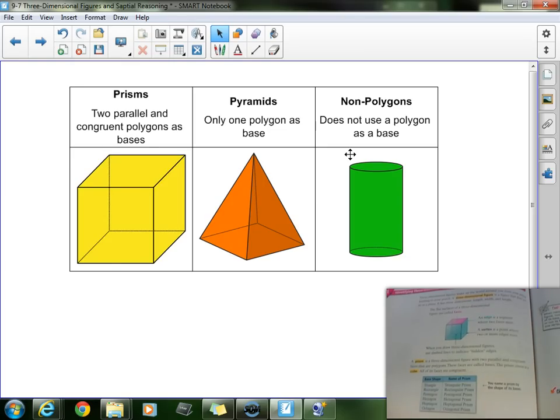The definition of a prism is it has two parallel and congruent polygons as bases. Let me talk about those words. First, parallel means they never intersect, they never cross. Congruent means they are the exact same, and polygons means they must be a polygon. In other words, they cannot be an open figure or a curved figure.